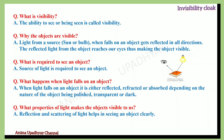What is required to see an object? A source of light is required. When light falls on an object, it is either reflected or absorbed, depending on the nature of the object — whether it is polished, transparent, or dark. Reflection and scattering of light help us to see the object clearly, so the reflection phenomenon is very important to see an object.